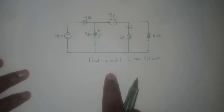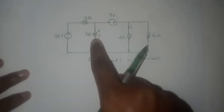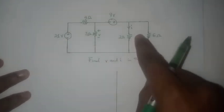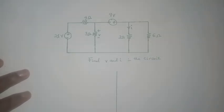In this problem we are required to find the voltage across the 3 ohm resistor and the current flowing through the 2 ohm resistor and to do this we'll be using node analysis.